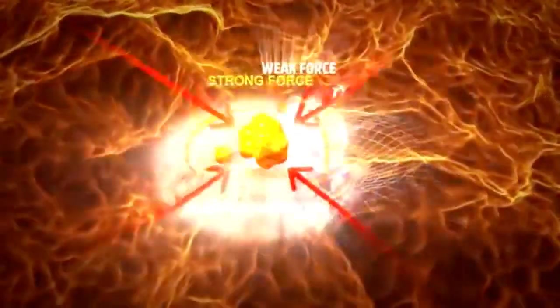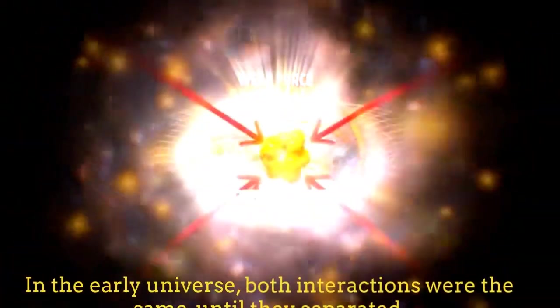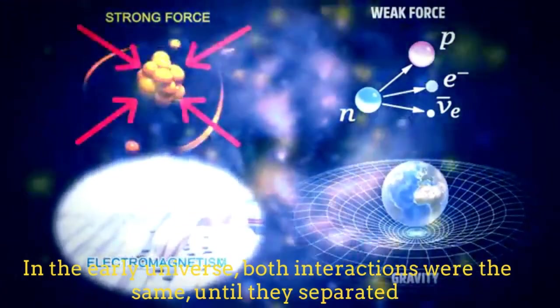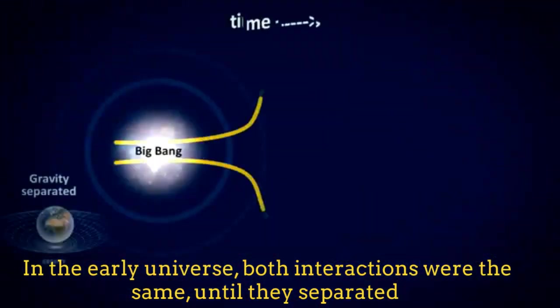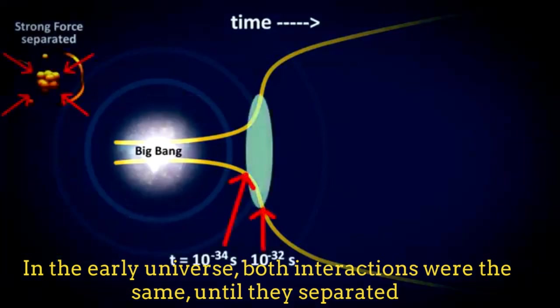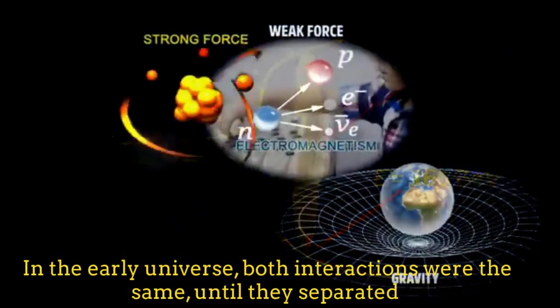During the Big Bang, all the interactions were a single one. After the Big Bang, when the universe became colder, gravity separated first from other interactions, and subsequently the strong interaction did the same. Subsequently, the electroweak interaction separated into weak interaction and electromagnetism. We can perceive each separation process for the interactions as a phase transition.